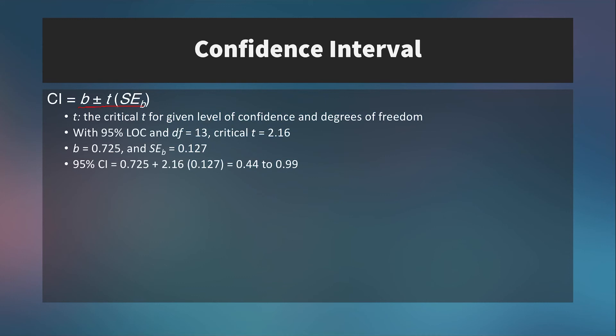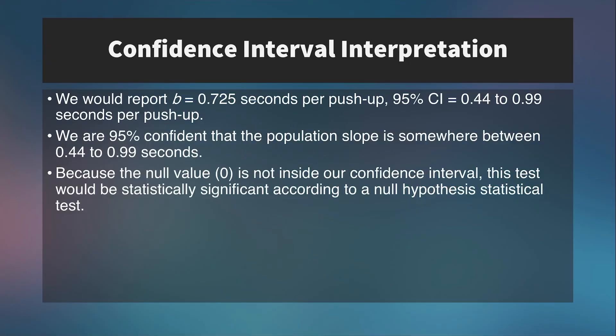Using a program like SPSS, a 95% confidence interval would equal 0.725 ± 2.16 × 0.127, which gives 0.44 to 0.99. So we report b = 0.725 seconds per push-up, with a 95% confidence interval of 0.44 to 0.99 seconds per push-up. This means we are 95% confident that the population slope is somewhere between 0.44 and 0.99 seconds per push-up. Rarely will we calculate this by hand — confidence intervals for bivariate regression and correlation coefficients can be done in a stats program.